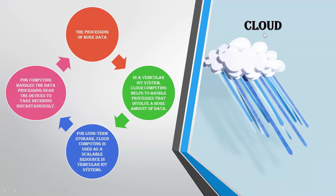Looking deeper at the cloud: we have moved to cloud computing because we are handling huge amounts of data and huge data processing is required. In the vehicular IoT system, cloud computing handles many data points fed in real time. Since cloud is long-term storage, the user can retrieve information and do analytics as needed. For fog computing, it handles data when there are a number of nearby devices, and then it can communicate and make decisions accordingly.